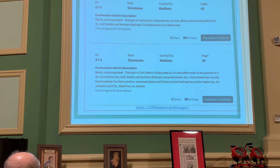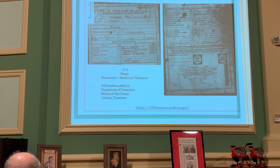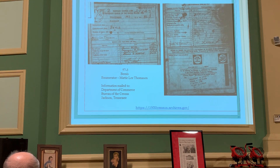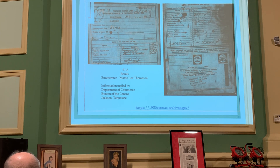After clicking on the population schedule, you'll see a cover sheet that was filled out and mailed in to the Bureau of Census in Jackson. This one tells me that Maddie Lee Thomason was the enumerator. It shows the population count in the corner, though it was hard to read — possibly 1,174 or 400-something. Each of those four areas — 57-1, 2, 3, and 4 — has one of these pages showing a breakdown of the payroll count and who verified it.